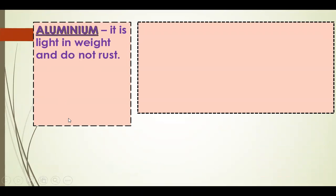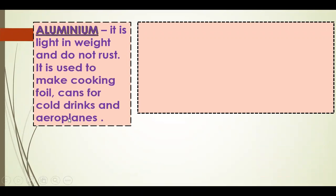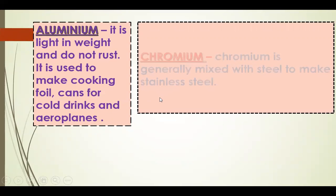Aluminium is light in weight and does not rust. It is used to make cooking foil, cans for cold drinks, and aeroplanes.